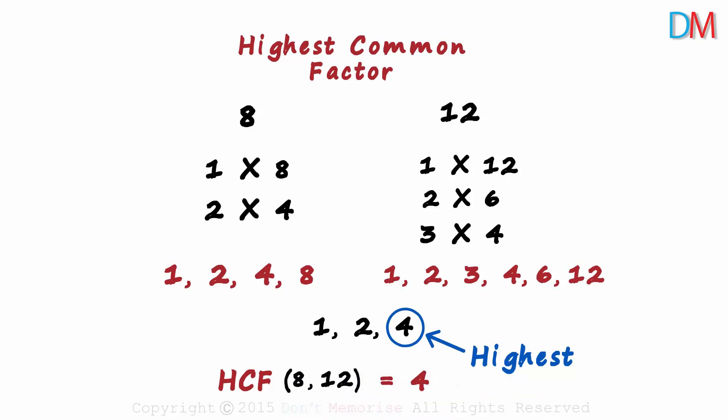Let's quickly go through what we did. First, we found out the factors of each of the numbers. Then we found out the common factors to both the numbers. And then we found out the highest common factor.